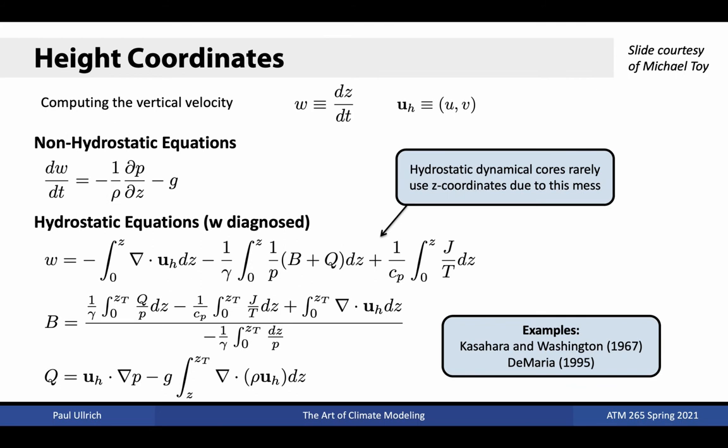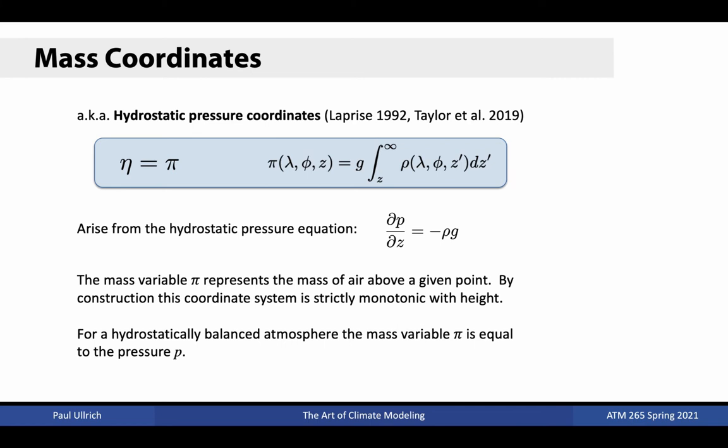So far, we've learned about height coordinates, which work well for non-hydrostatic models, and pressure coordinates, which work well for hydrostatic models. This prompts the question of whether there are coordinate systems that work well for both. In fact, a small modification to the pressure coordinate system does yield a coordinate system that can be used for both hydrostatic and non-hydrostatic models.